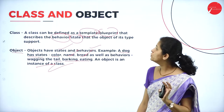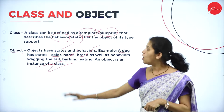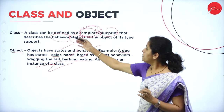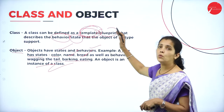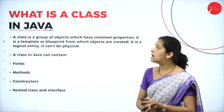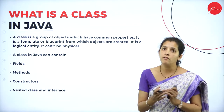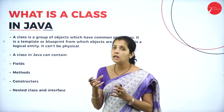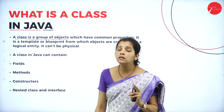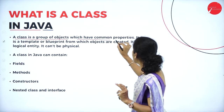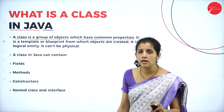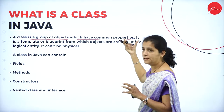So, a class is a user-defined data type that describes state as well as behavior — it is also called a blueprint or template. An object is nothing but an instance of the class. In Java, a class is termed as a group of objects which have common properties. In Java, a class is a group of objects where each object has common properties.